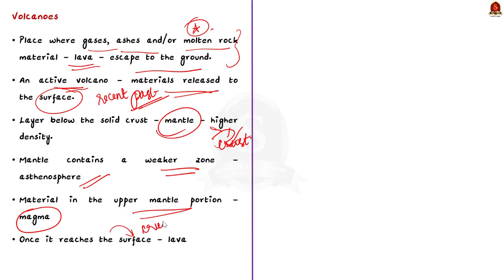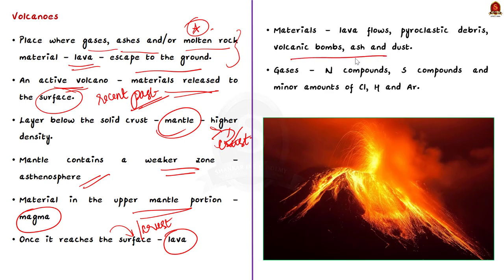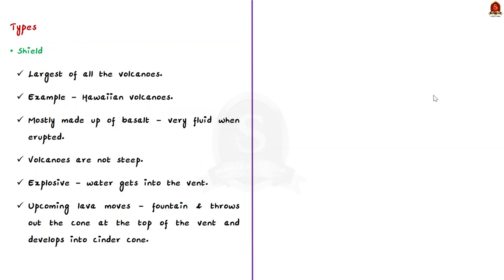The material that reaches the ground includes lava flows, pyroclastic debris, volcanic bombs, ash and dust, and also gases such as nitrogen compounds, sulfur compounds, and minor amounts of chlorine, hydrogen and argon. Volcanoes are classified on the basis of the nature of eruption and the form developed at the surface. Now let us see the major types of volcanoes one by one.